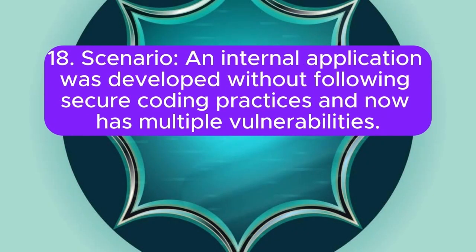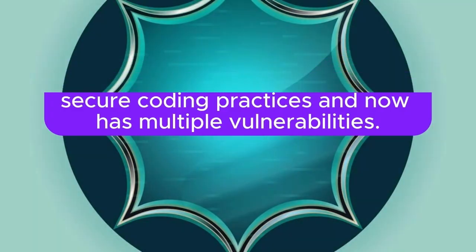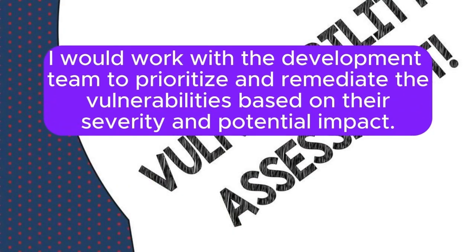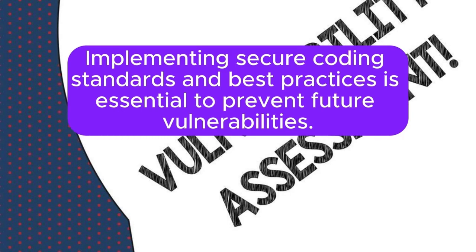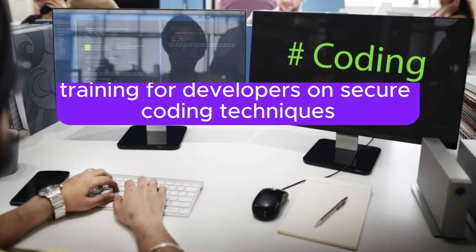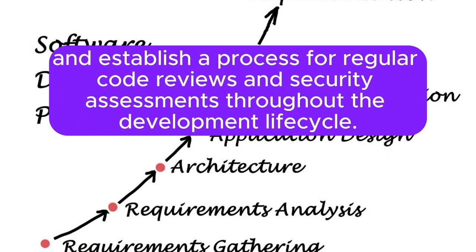Scenario 18: An internal application was developed without following secure coding practices and now has multiple vulnerabilities. How do you address this issue? I would conduct a thorough code review and vulnerability assessment to identify all security flaws in the application. I would work with the development team to prioritize and remediate the vulnerabilities based on their severity and potential impact. Implementing secure coding standards and best practices is essential to prevent future vulnerabilities. Additionally, I would provide training for developers on secure coding techniques and establish a process for regular code reviews and security assessments throughout the development lifecycle.